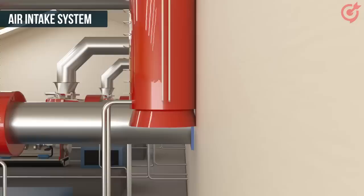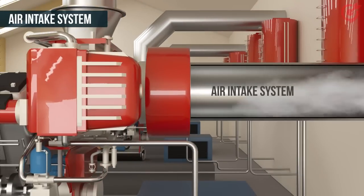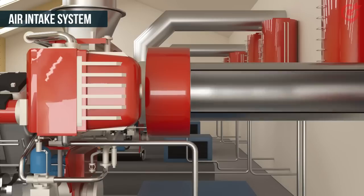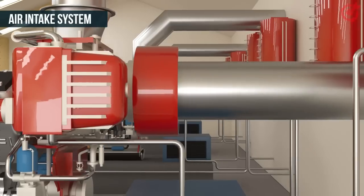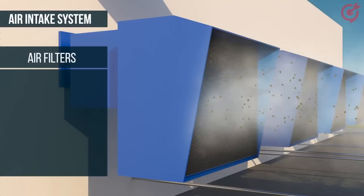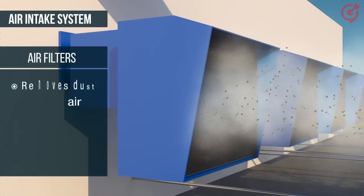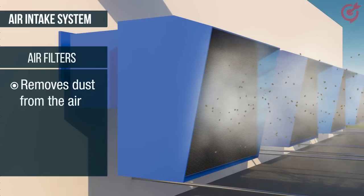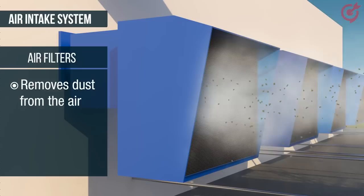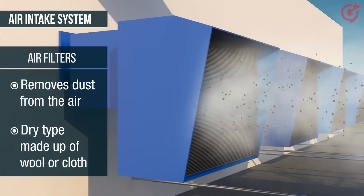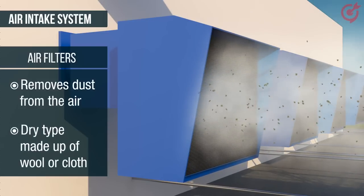The air intake system intakes air and supplies it to the engine for fuel combustion. Its air filters remove dust from the air before forwarding it to the engine. Air filters can be of dry type, made up of wool or cloth.